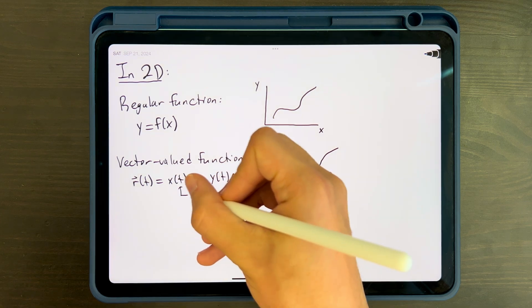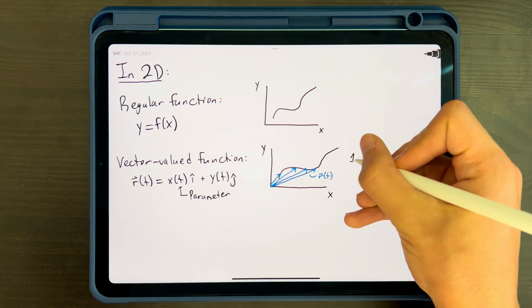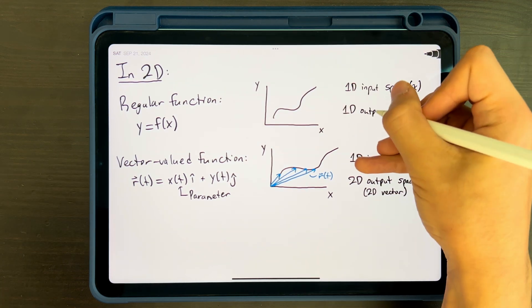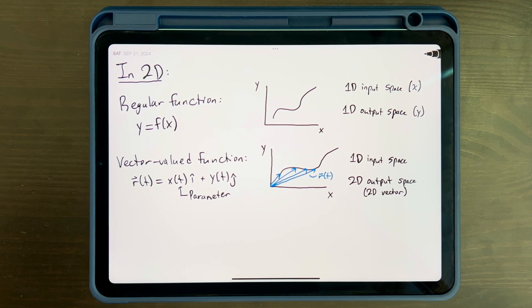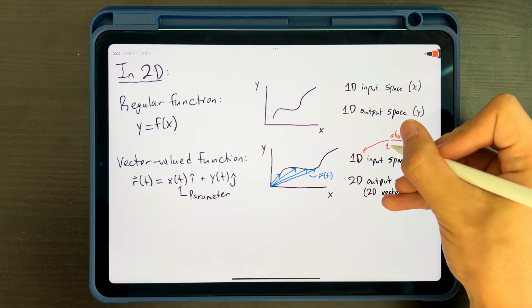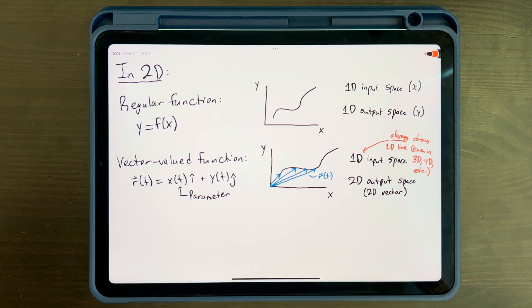The variable t here is called a parameter. Effectively, this 2D vector valued function has a 1D input space and a 2D vector output. Notably, a VVF with only one input parameter can only draw a 1D curve, no matter if it exists in 2D, 3D, 4D, or n-dimensional space.